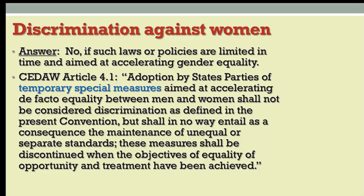These are what is known in international human rights law as temporary special measures. In the United States, they'd be referred to as affirmative action. But the specific goal of these measures is not to instantiate or put in place permanently some sort of unequal or separate standards, but rather to enhance and speed up gender equality. These measures are only temporary since they should be discontinued once those objectives have been achieved. So favoring women and girls, which might be considered controversial in some countries, would not be considered discrimination against women.